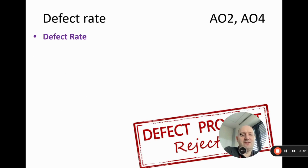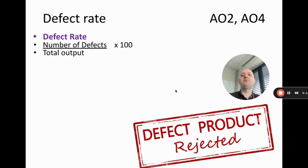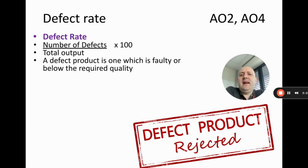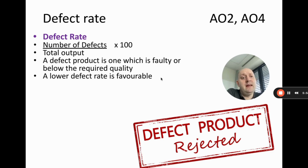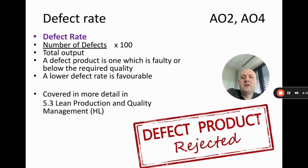The second metric is defect rate, calculated as: number of defects divided by total output, multiplied by 100, giving a percentage. A defective product is one that is faulty or below the required quality — basically one we cannot sell. A lower defect rate is favorable. Defects become especially important when a business unknowingly sells faulty products to consumers; car companies, for example, sometimes issue large product recalls. This is covered in more detail in section 5.3 on lean production.